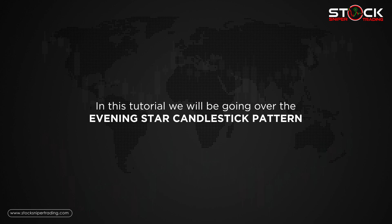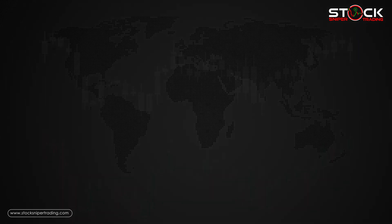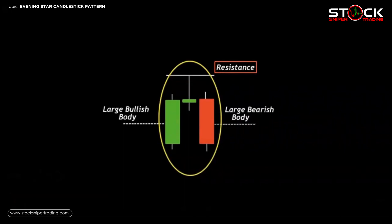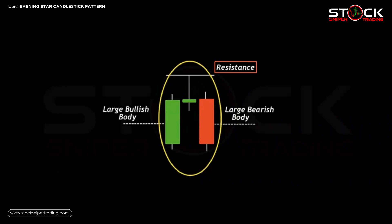Welcome to Stock Sniper Trading. In today's tutorial we will be going over the evening star candlestick pattern. The evening star candlestick pattern is a three-candle pattern — a visual pattern consisting of three or more candlesticks that is interpreted as a bearish sign by technical traders. The evening star candlestick pattern is considered a sign of despair in a bullish market.